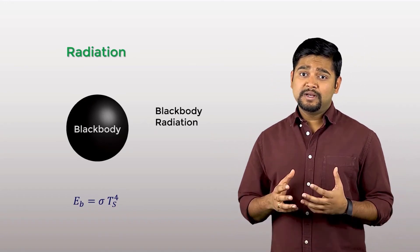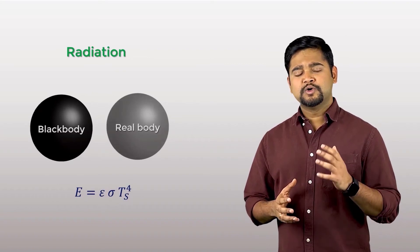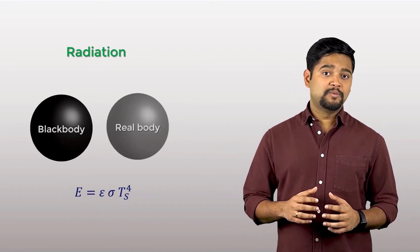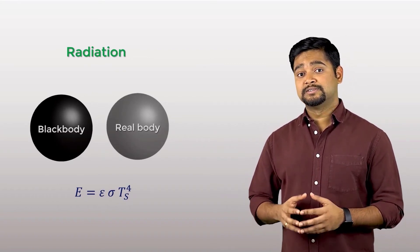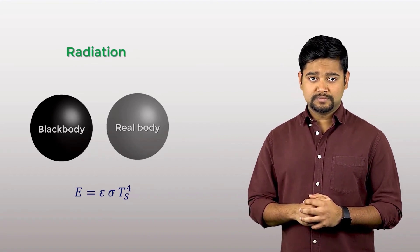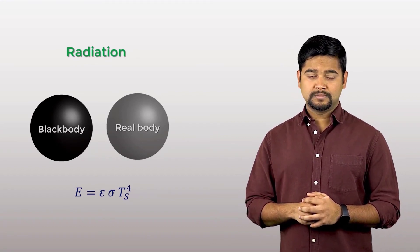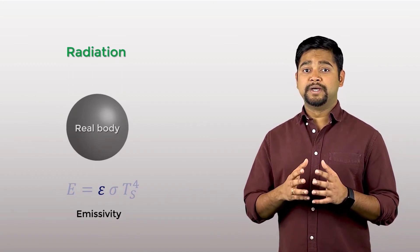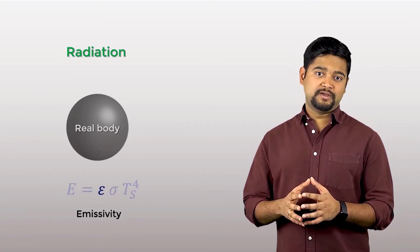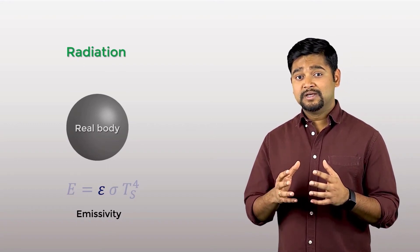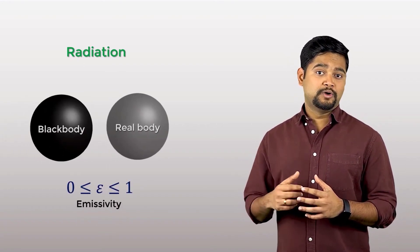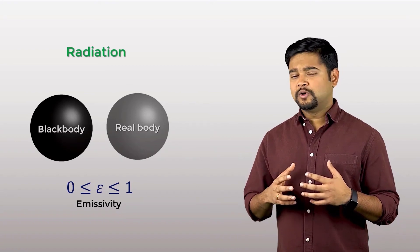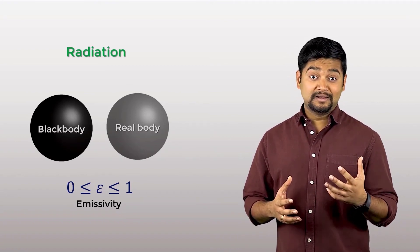The heat flux emitted by a real body is always less than that of a black body. And this is given by this equation. Here, epsilon is the emissivity, which is a measure of how effectively a surface emits energy relative to a black body. It depends on the material of the surface and its finish.